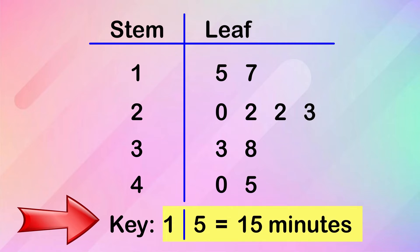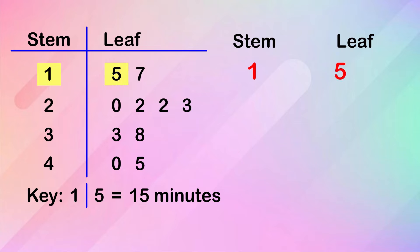The key tells us how to read a Stem and Leaf Plot. We have 1 on the stem and 5 on the leaf, so we read it as 15 minutes. Then we have 1 and 7, and that's 17 minutes.